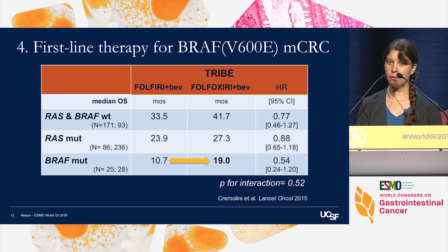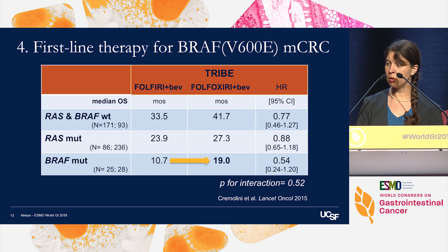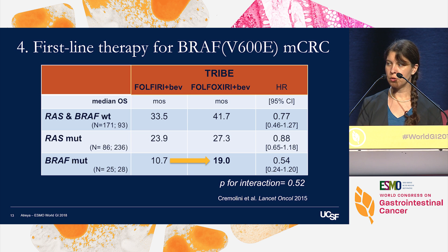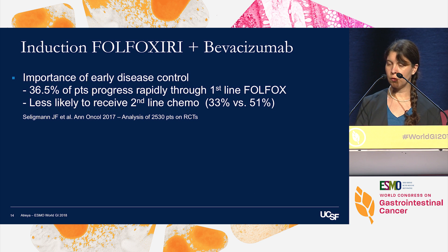The remainder of my talk focuses on caring for patients with BRAF V600E-mutated metastatic colorectal cancer. In fit patients, I always consider first-line chemotherapy with FOLFOXIRI with or without bevacizumab, based on the TRIBE data suggesting improved overall survival with more aggressive induction chemotherapy. My main reason for choosing FOLFOXIRI with bevacizumab is the importance of early disease control in this population, where we may have only one shot on goal.